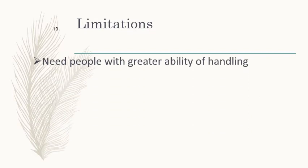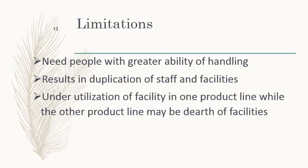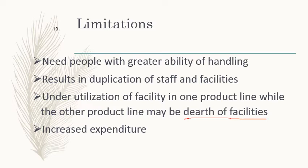Limitations: it requires people with greater ability to handle different product lines. It results in duplication of staff and facilities — each product line may have its own marketing, production, purchase, and dispatch managers. Additionally, one product line may utilize excess resources while another faces a shortage of facilities, and overall expenditure increases due to more workforce and facilities.